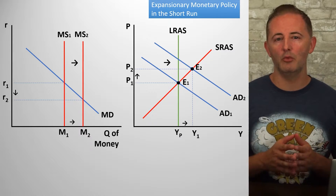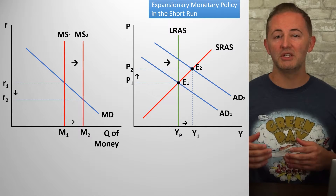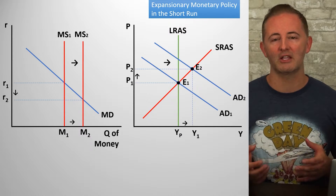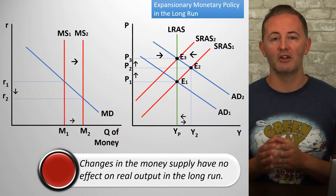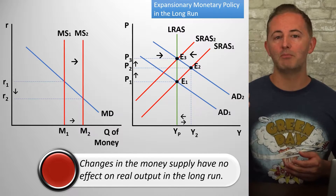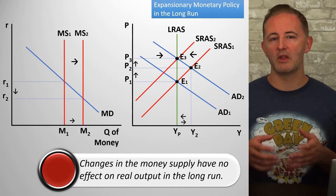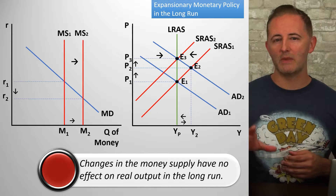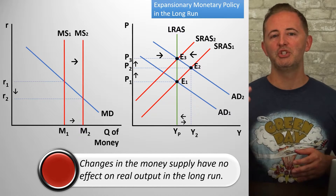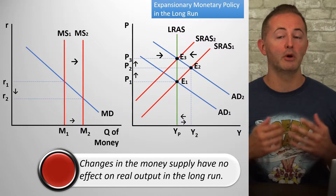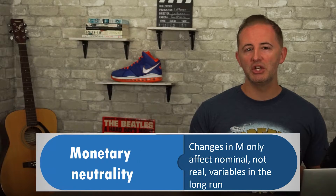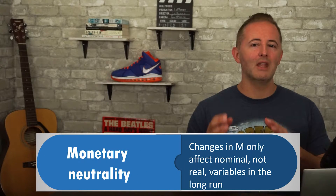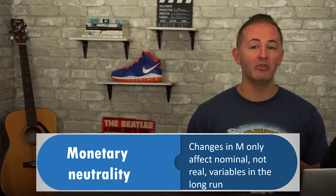Let's keep going and see what happens eventually. On the ADAS model, nominal wages that were sticky in the short run become flexible and increase, causing the SRAS curve to shift to the left, bringing the economy back to long-run equilibrium. This shows that when the economy is at full employment, changes in the money supply have no effect on real output in the long run. This is the idea of monetary neutrality — that changes in the money supply only affect nominal variables, not real variables, in the long run.